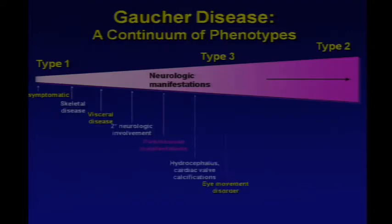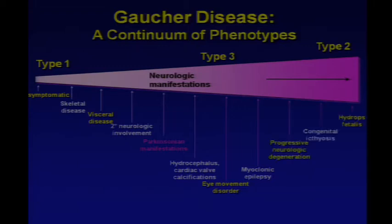Having worked on this disorder for some time, I've begun to think of it much more as a continuum of phenotypes — ranging from asymptomatic octogenarians diagnosed by accident late in life or at autopsy, to fetuses that succumb in utero, and a whole gamut of phenotypes in between. Perhaps the major distinction is that some patients have brain involvement and some don't. What we're going to focus on today is those who develop Parkinsonian manifestations.